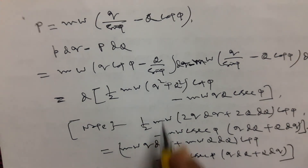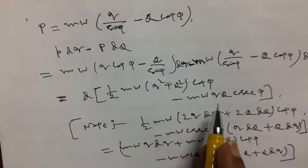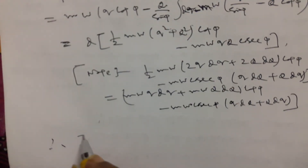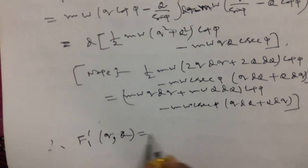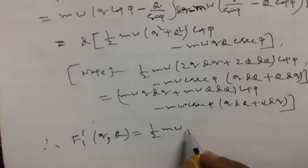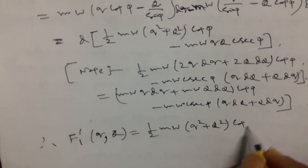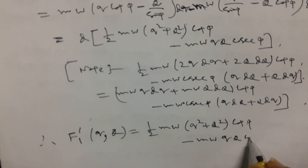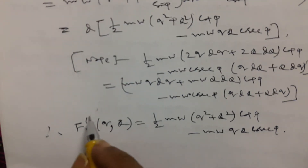The exact perfect differential is the quantity within the bracket. Therefore, it can be written as F₁′. So F₁(q, Q) equals (mω/2)(q² + Q²) cot φ minus mω q Q cosec φ. This is the first generating function.